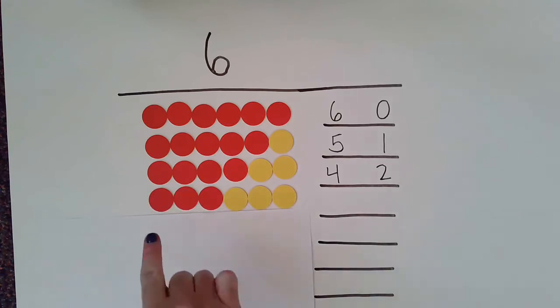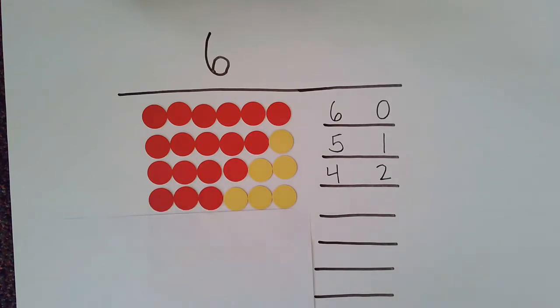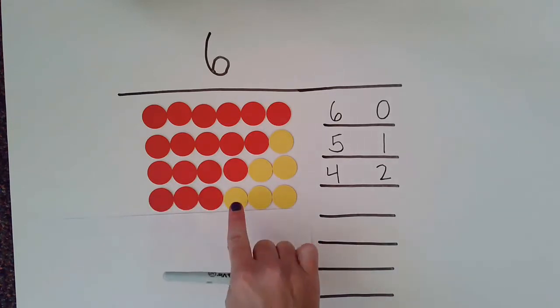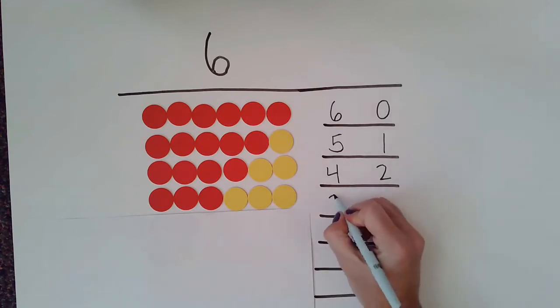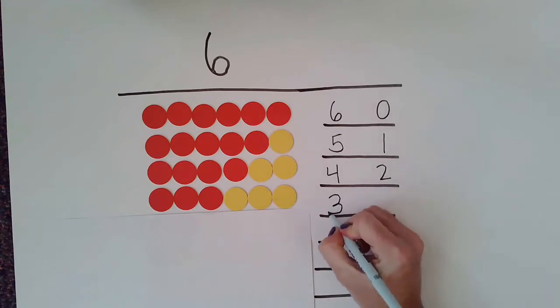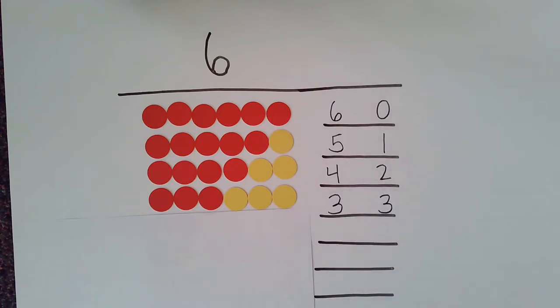Now I have one, two, three reds and one, two, three yellows. So I know that three and three are number partners for six.